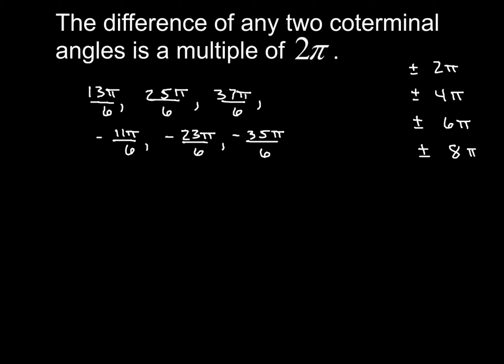We had all of these components here, 13π over 6, 25π over 6, 37π over 6, negative 11π over 6, etc. So if we were to subtract any two of those, we would get some multiple of 2π. So if we did, we'll just start with the first one, 13π over 6. If we subtracted, say, 25π over 6, we end up with negative 12π over 6, which when I reduce that is negative 2π, which is a multiple of 2π.